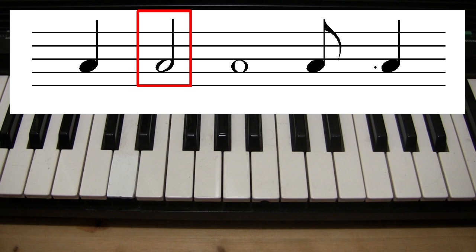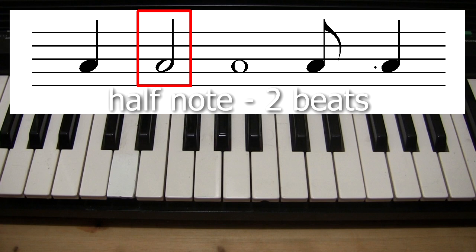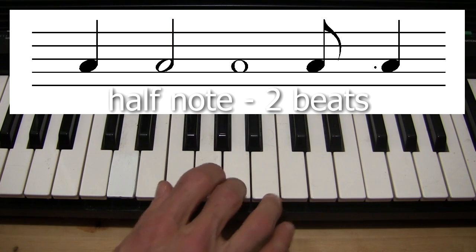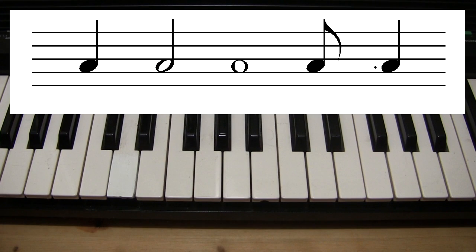This one that's a white circle with a line is called a half note. A half is twice as long as a quarter, so play it for two beats. Playing one after the other, we get this.